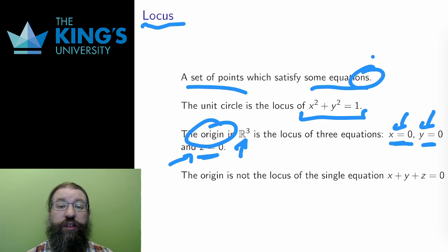Notice that the origin is not the locus of the single equation x plus y plus z equals 0. It is true that the origin satisfies, so it is a point on the locus, but there are many other points on this locus as well, such as the vector 2, negative 2, 0.